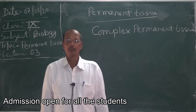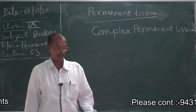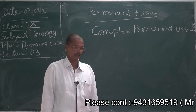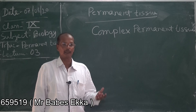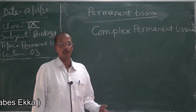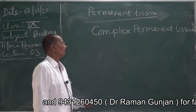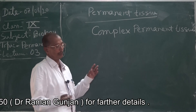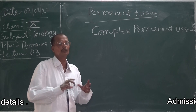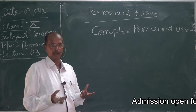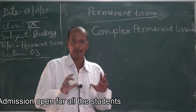As you know, simple permanent tissue consists of only one kind of cells, but complex permanent tissue is formed of more than one kind of cells. In complex permanent tissue, the different kinds of cells coordinate together to perform a common function.